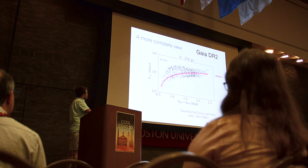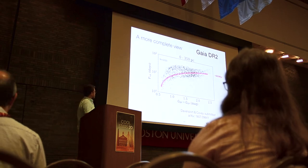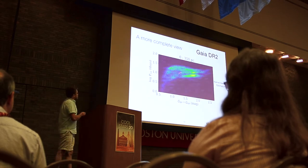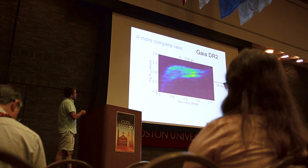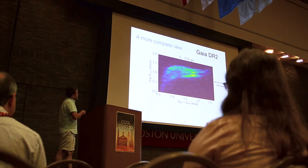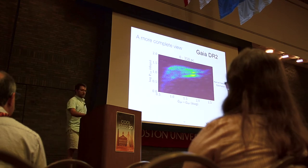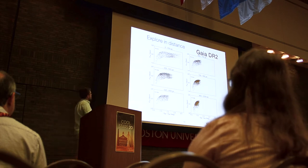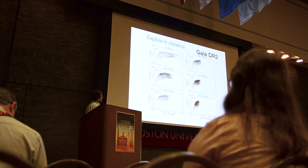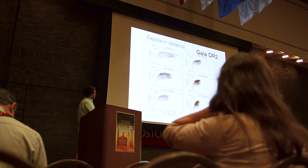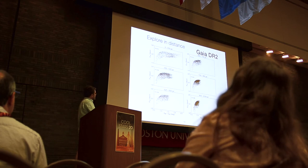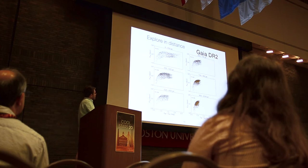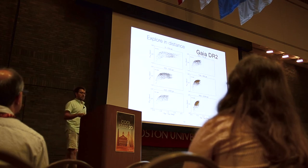In the inner regions within 300 parsecs, we can see this bimodality again clearly. This gap, somewhere around 600 million years, very clearly stands out. There may be even more age structure — some clumpiness that seems to be visible. Exploring this as a function of distance, within 500 parsecs you can still squint and see this gap, but it starts to go away when you get out towards a kiloparsec. This bimodality seems to disappear at larger distances.